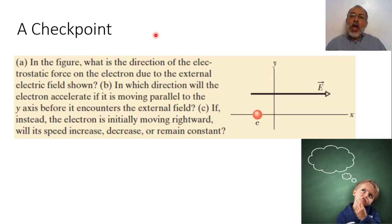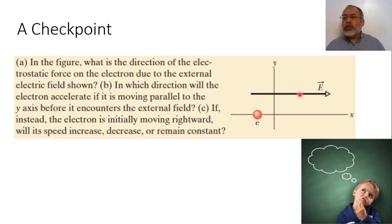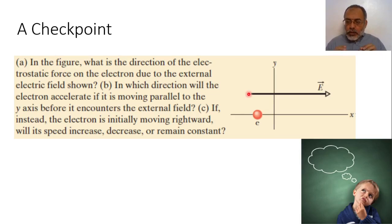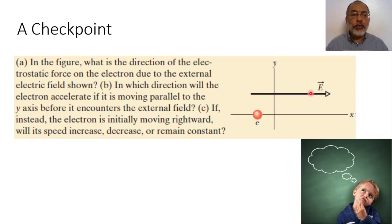As an example, assume that we have an electron and we have an electric field directed in the X direction. If the electric field is directed in X direction, it means that if we have a positive charge, the force on this positive charge would be directed in X direction. So the force on a negative charge will be directed in the negative X direction.